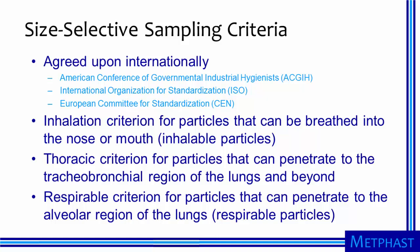The inhalation criterion defines the fraction of particles at each size that can be breathed into the nose or mouth — this fraction is referred to as inhalable particles. The thoracic criterion, a subset of the inhalation criterion, defines the fraction of particles of each size that can reach the tracheobronchial region of the lung and beyond. Then the respirable criterion, a subset of the thoracic criterion, defines the fraction of particles that can penetrate to the deepest parts of the lungs, the alveolar region — this fraction is referred to as respirable particles.